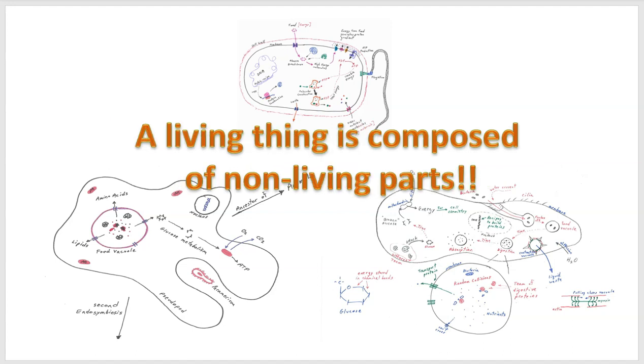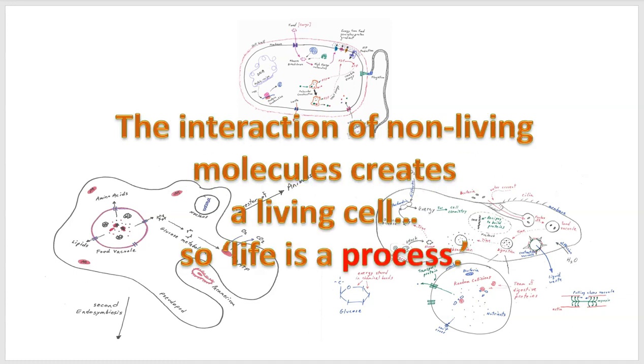In other words, a living thing is composed of non-living parts, which means it's the interaction of non-living molecules that creates a living cell. This makes life a process, not a thing. So life is an ongoing process. It is a membrane-bound structure with all kinds of these different parts with purposes. And when all the protein parts are doing their assigned jobs, the whole cell is alive.